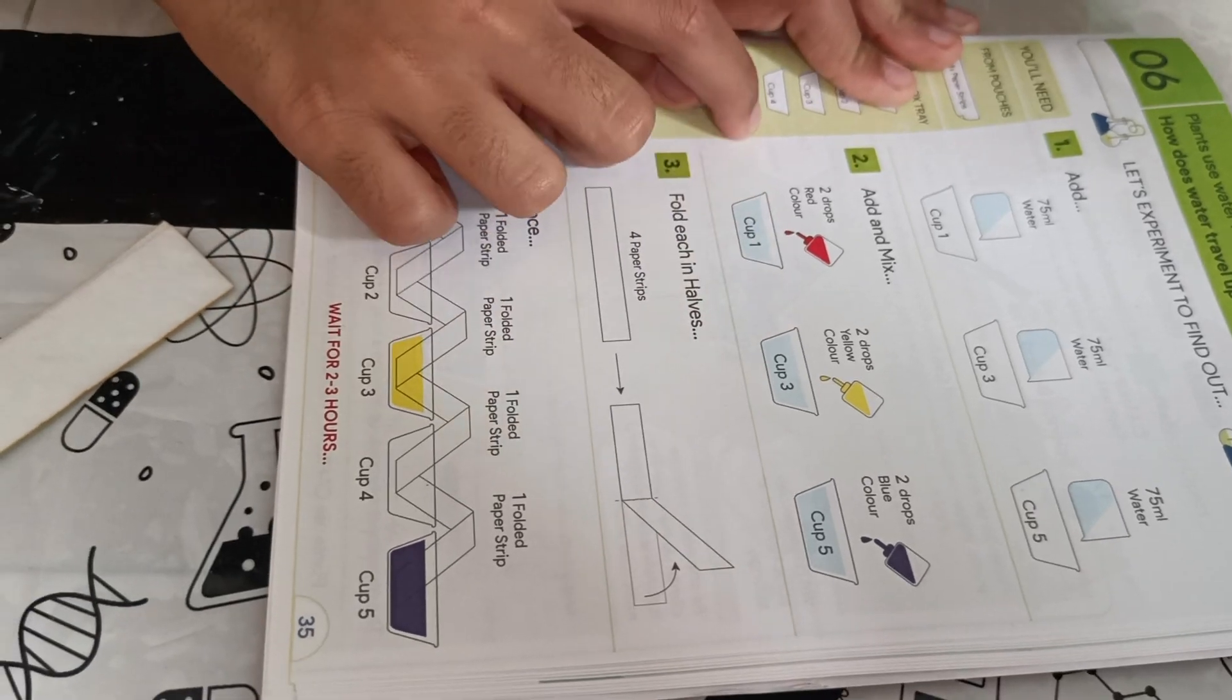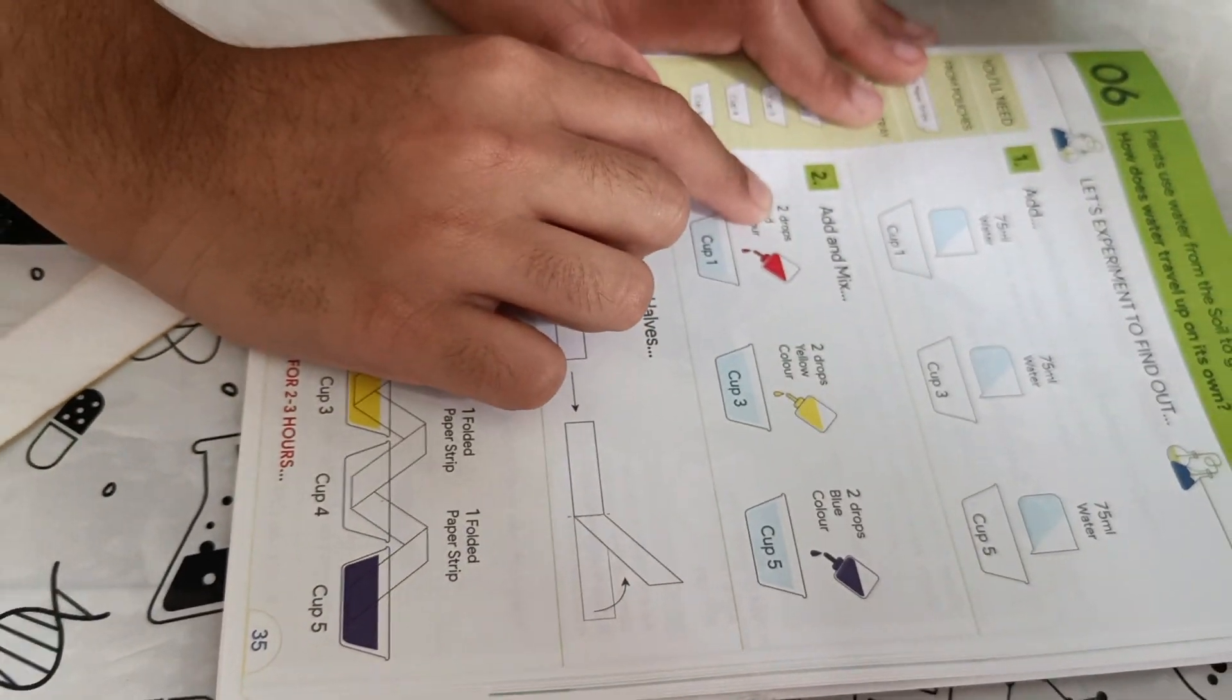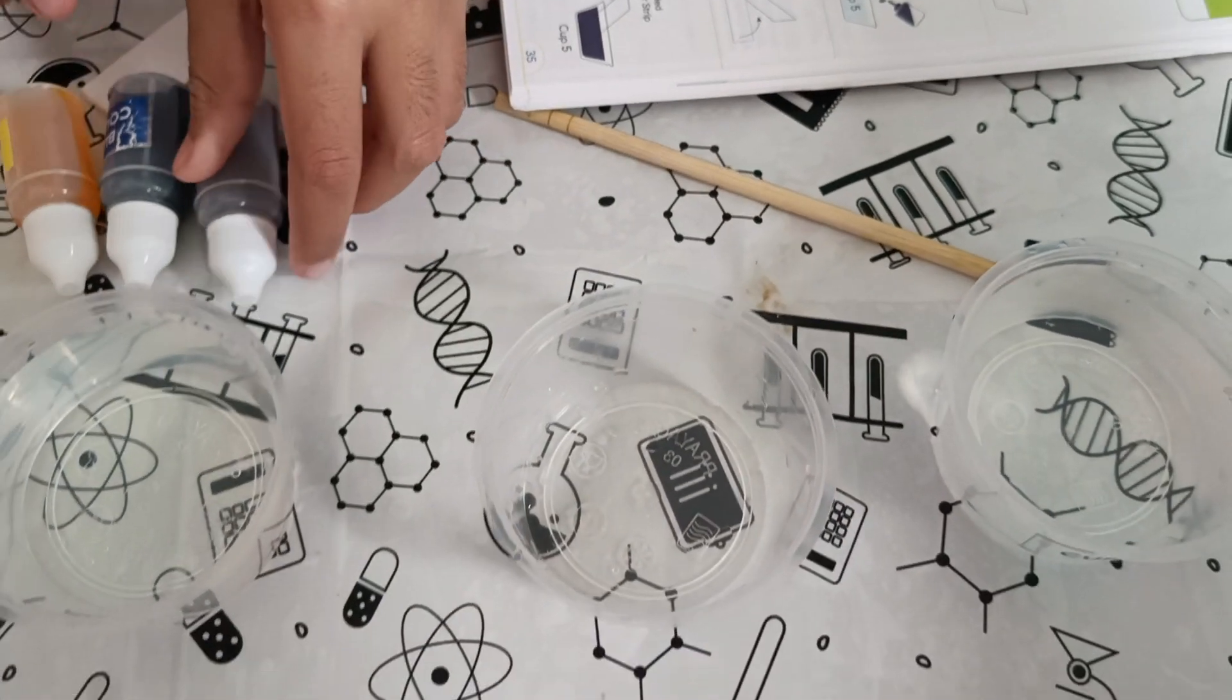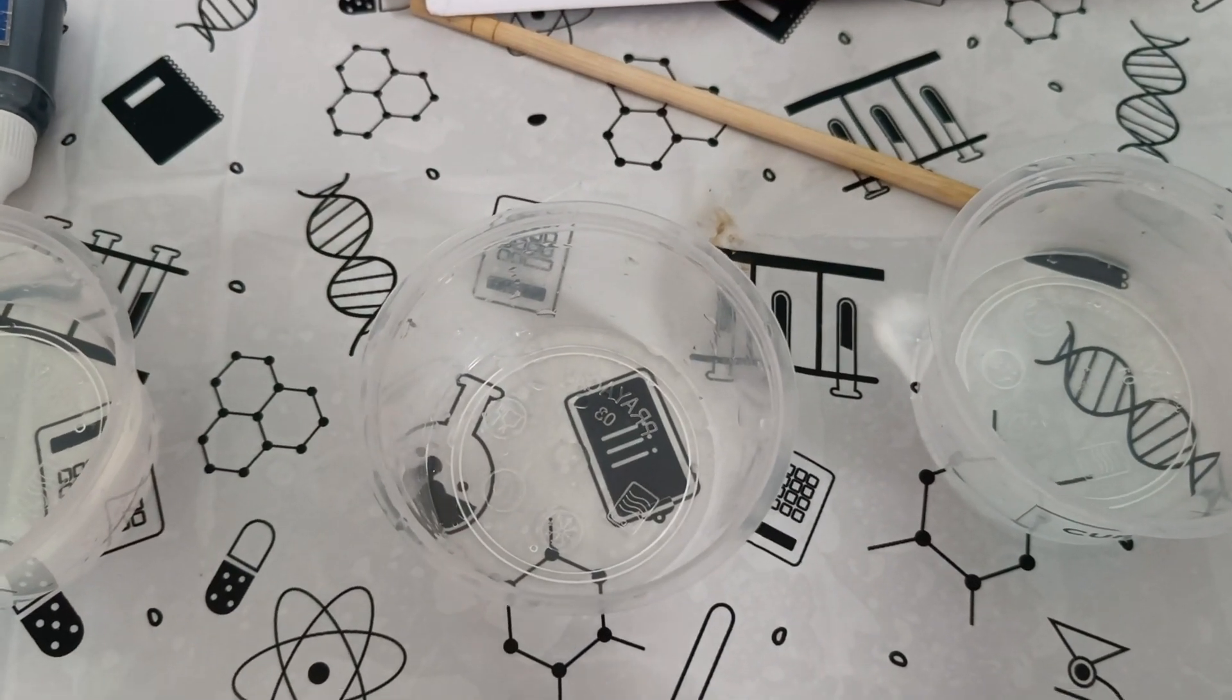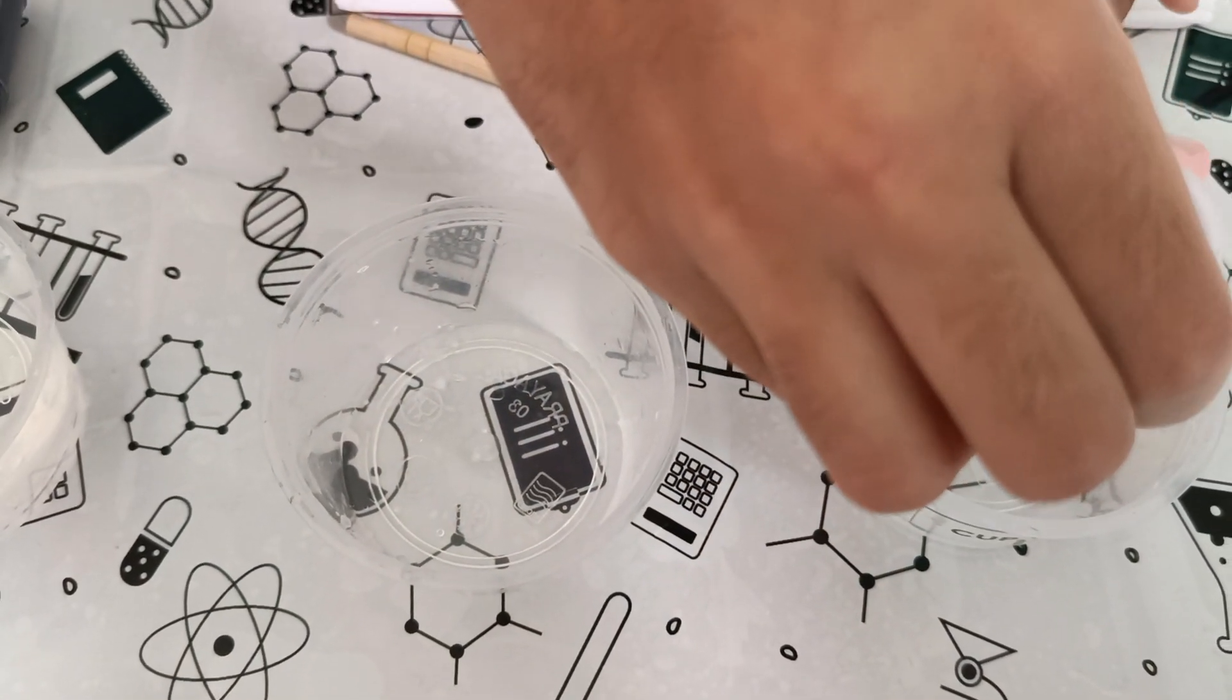Next, let us see what we have to do. Add and mix two drops of red color. So it means we have to put two drops of red color in cup number one.